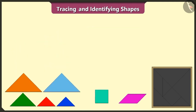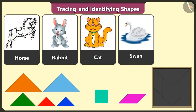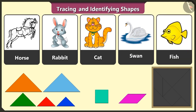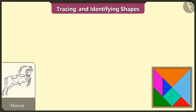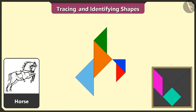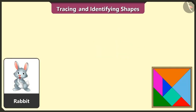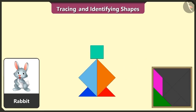Today, we will create figures of horse, rabbit, cat, swan and fish using these shapes. Look, this is a horse — we will make a horse using 5 triangles, 1 square and 1 quadrilateral. See, the horse is ready. This is a rabbit — now, we will try to create a rabbit using 4 triangles, 1 square and 1 more triangle and 1 quadrilateral. See, rabbit is ready.